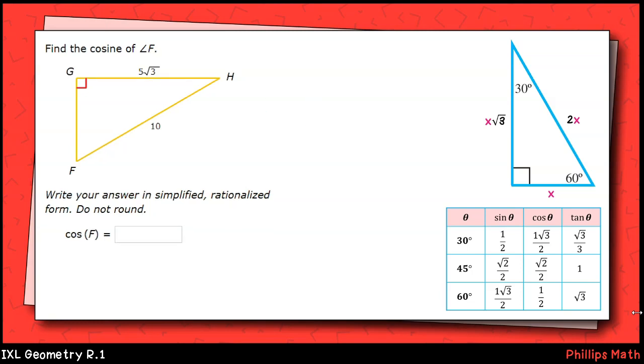Next, we have another 30-60-90 triangle. How did I know? Well, 5 times the square root of 3 measures the longer side, and the hypotenuse is 10, which is 2 times 5. Notice that the hypotenuse is 2 times the shorter side. So the shorter side, or X in this case, must be 5. Again, the shorter side is across from the 30-degree angle, and the longer leg is across from the 60-degree angle. That means that angle F is 60 degrees.